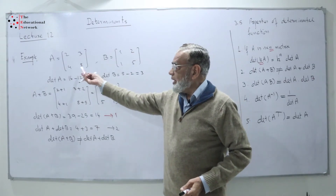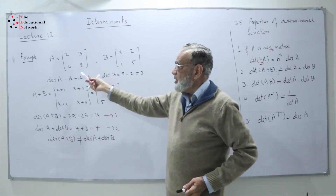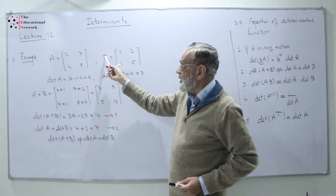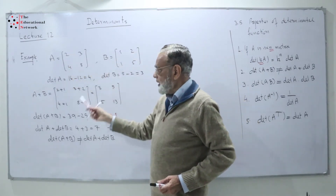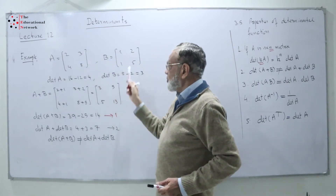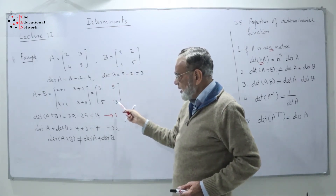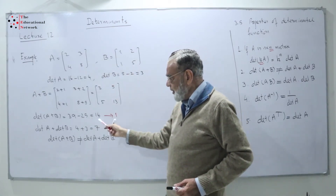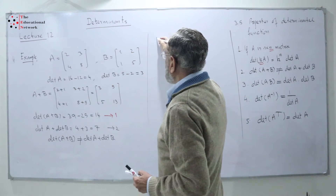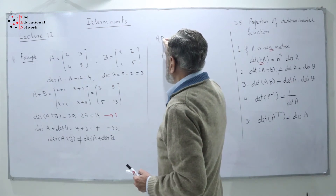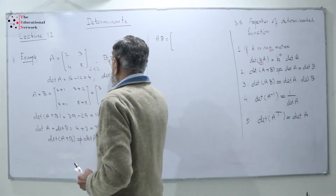We have seen that determinant of A plus B is not equal to determinant of A plus determinant of B. We found determinant of A as 16 minus 12 equals 4, and determinant of B as 5 minus 2 equals 3. Now we take example 3 using the same matrices. We take the product AB. Product AB — we can multiply since both are 2 by 2.